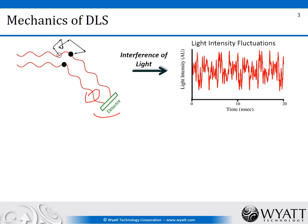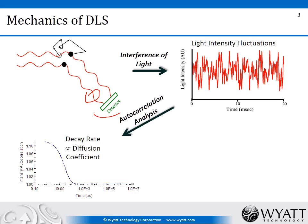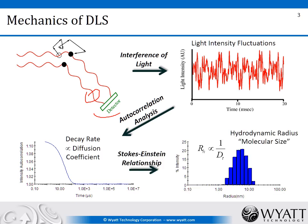Over time, as we measure the light scattering over timescales of microseconds to milliseconds, we see intensity fluctuations which essentially look like noise. Fortunately, that noise contains useful information: the rate of diffusion of the particles, which is related to their size. We perform autocorrelation analysis, which gives us the rates of fluctuations in the light scattering intensity. This can be fit to determine a diffusion coefficient, which is converted to the hydrodynamic radius using the Stokes-Einstein relationship, and the size and distribution of sizes can be determined.